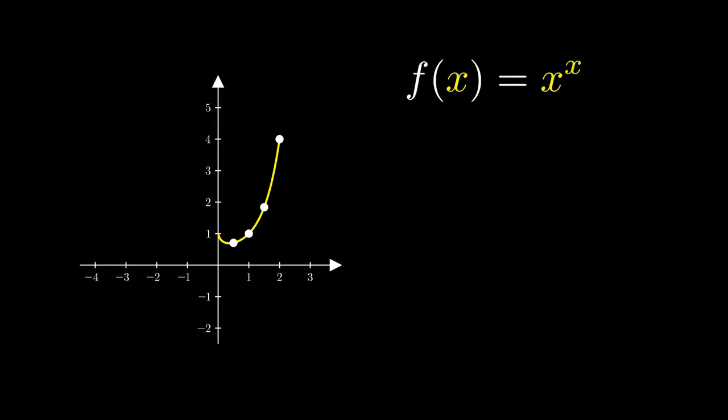Could we try to fill in the graph on the left-hand side? If we consider negative 1 to the negative 1, what we are really doing is taking 1 divided by negative 1. This simplifies to negative 1 over 1, which simplifies to negative 1. Let's plot the point on the graph.